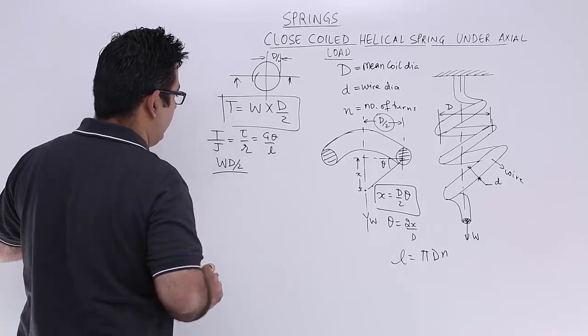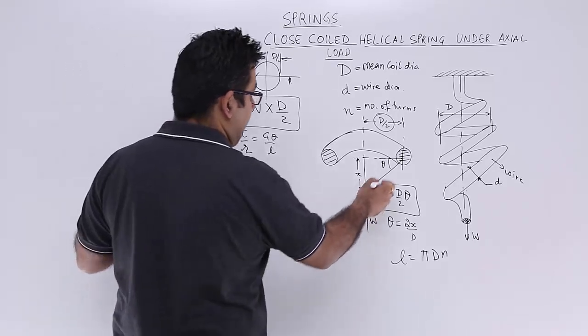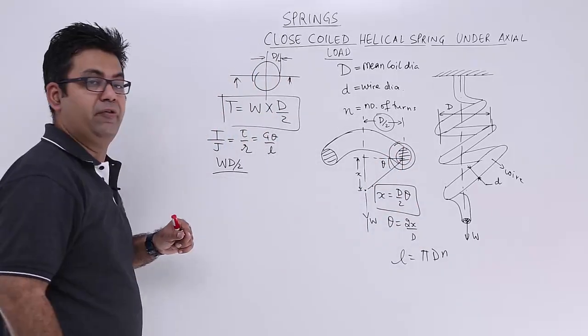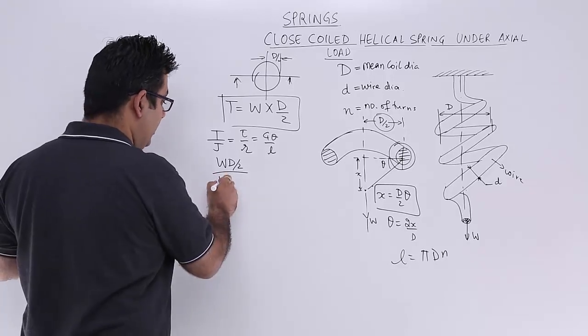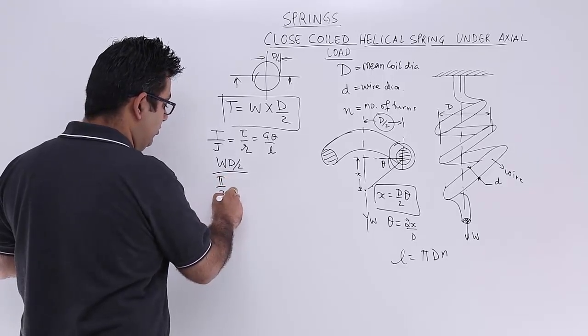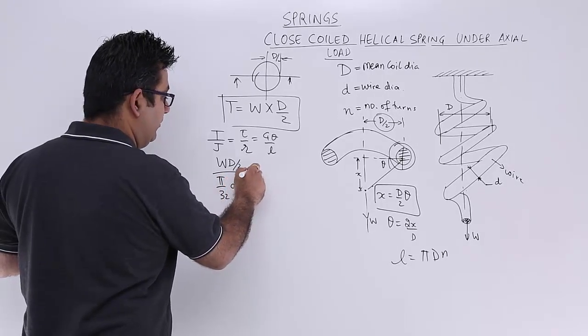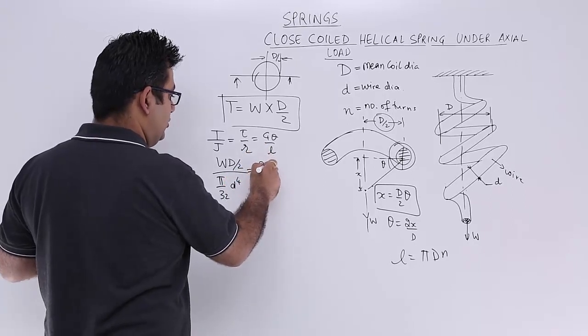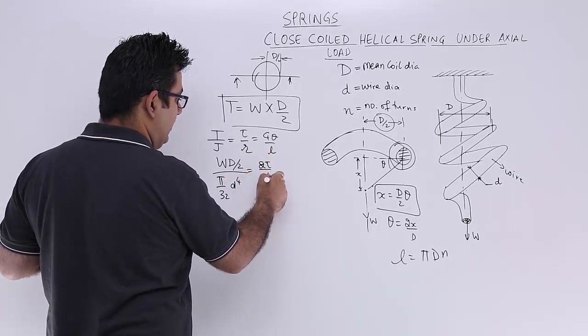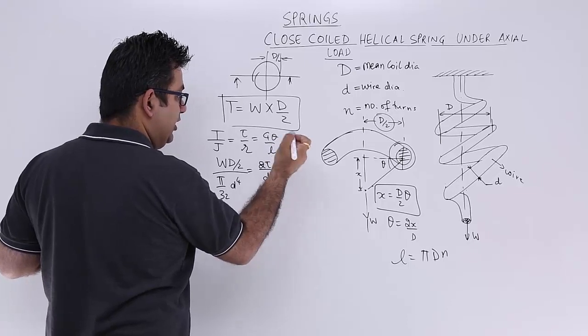So T I know is W into D by 2. J of the wire, we will find out the polar moment of inertia of the wire. So it will be pi upon 32 into d to the power 4. This becomes 2 tau upon d is equal to G.